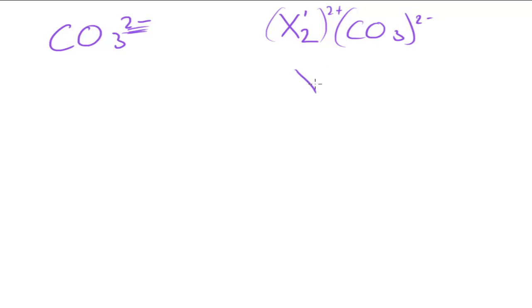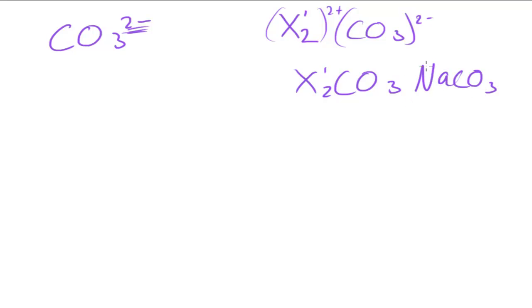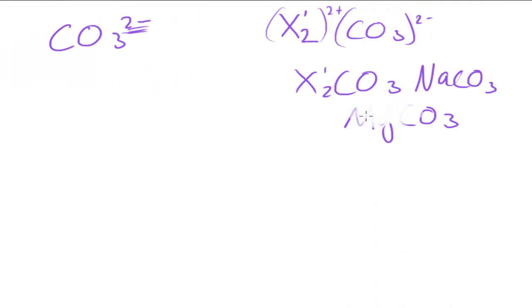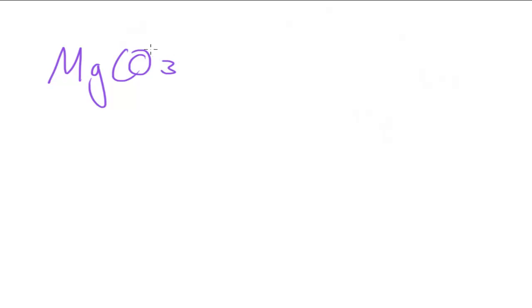For example, sodium (group 1) gives Na₂CO₃, whereas a group 2 metal like magnesium gives MgCO₃ because magnesium is 2+. So the metal carbonate used in this example will be MgCO₃.